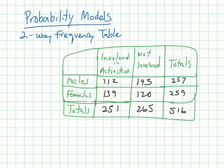So we are looking for someone that's female that's not involved. So that would be 120. So that's 120 females that were not involved. The probability would be over the total number of people, which we can see is 516. And that would equal 0.233 or a 23.3% chance that we would have a student who is female and not involved in extracurricular activity.